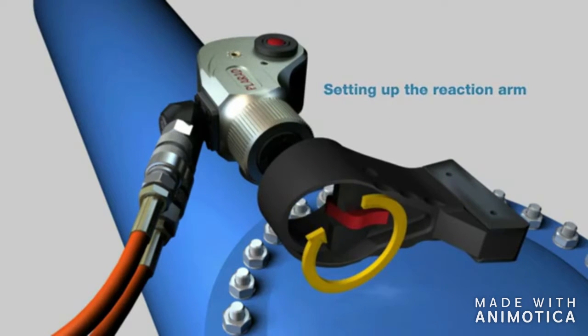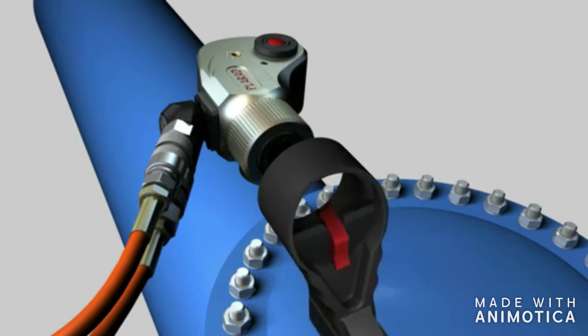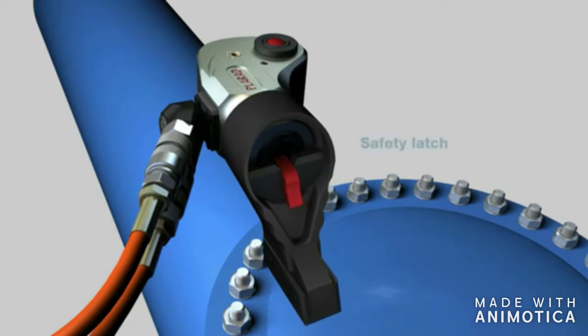Start by setting up the reaction arm. The safety latch allows the reaction arm to be removed and prevents the reaction arm from being unlocked by accident.